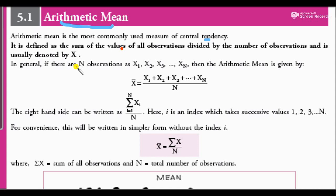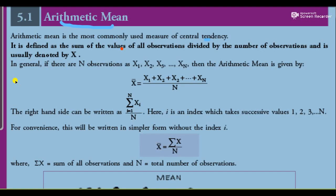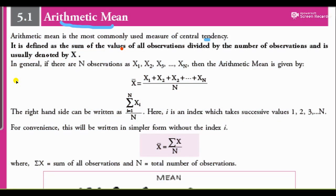So here you can see the formula: x̄ is equal to summation of x upon n. This is the arithmetic mean formula — short and sweet.